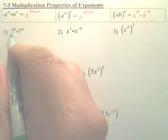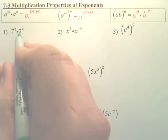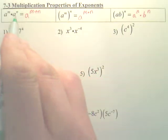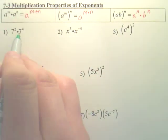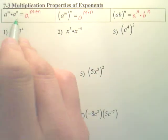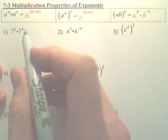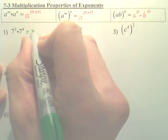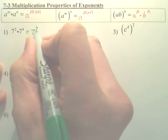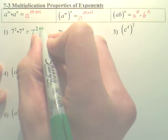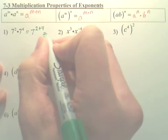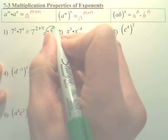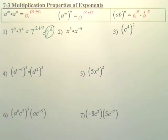Number one: seven squared times seven to the fourth. What you should notice is they both have the same base, so according to the first property you just add the exponents. My answer is simply seven to the sixth — two plus four equals six. I'm not going to worry about multiplying seven six times.